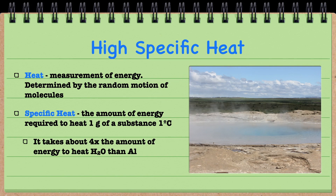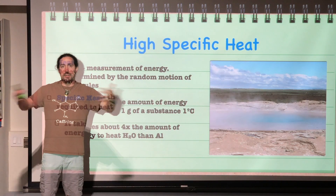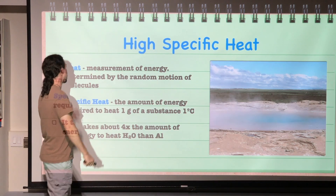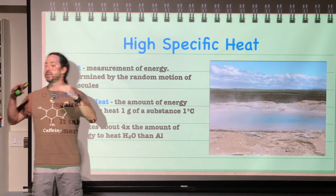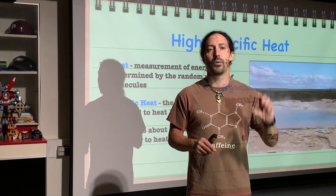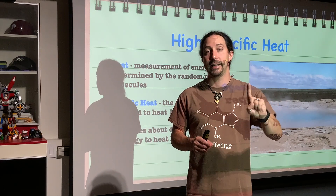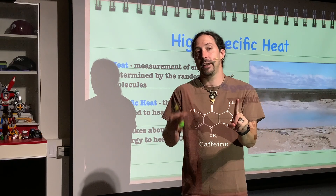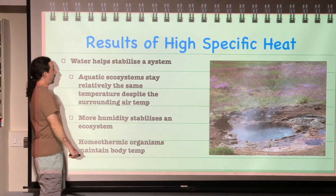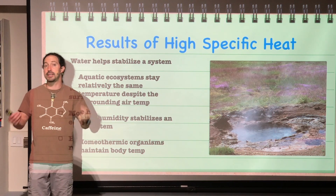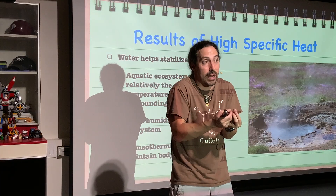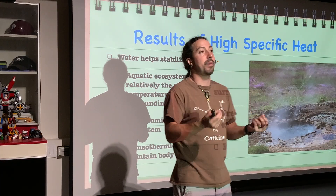Water also has something called high specific heat. Heat is the measurement of the movement of molecules — how fast they are moving around. Specific heat is a property of matter: it literally means you take one gram of a substance and heat it one degree Celsius, and measure how much heat energy is required. This results in some really cool stuff — it helps stabilize systems. That's not just an ecosystem; it's also you, me, or a single cell. All of those things are stabilized by this property of water.